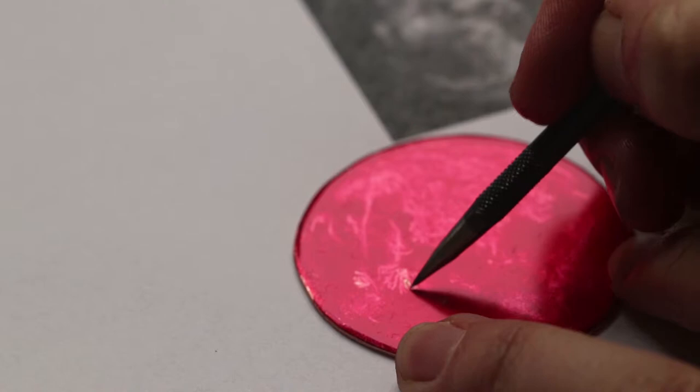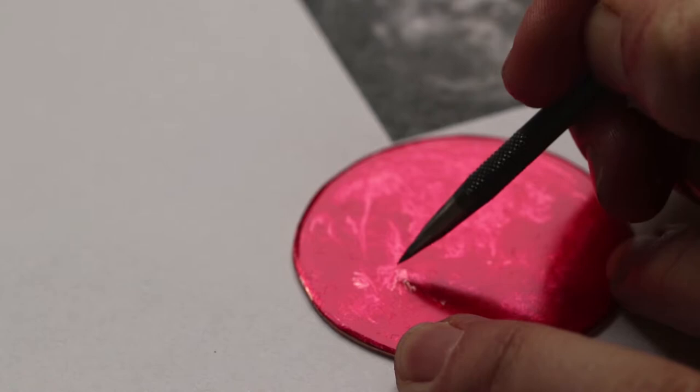This step transforms the ground into a hard ground, and at this point I drew on my plate with an etching needle to gently scrape back the ground and add fine line work.